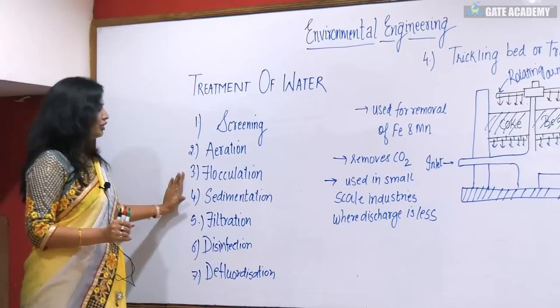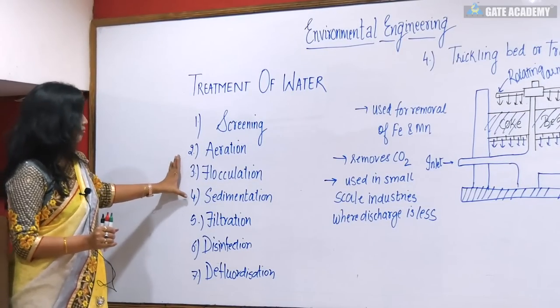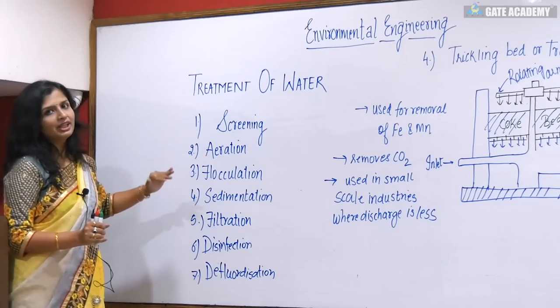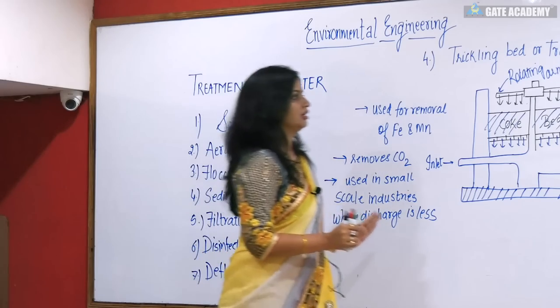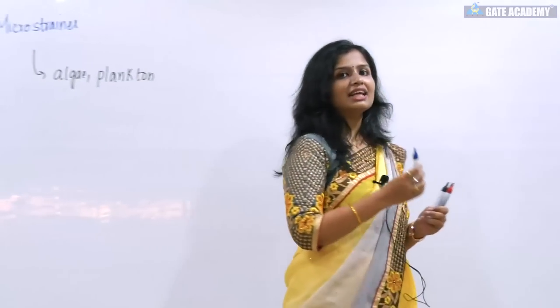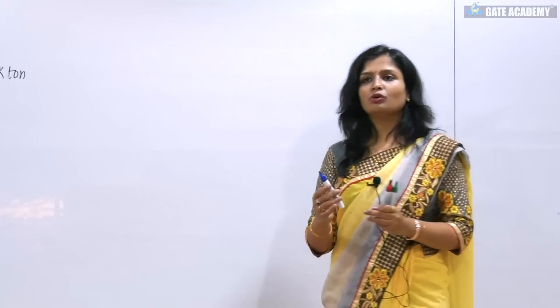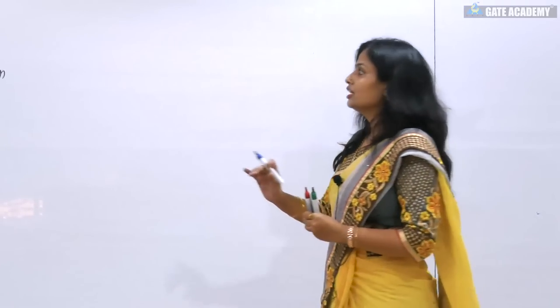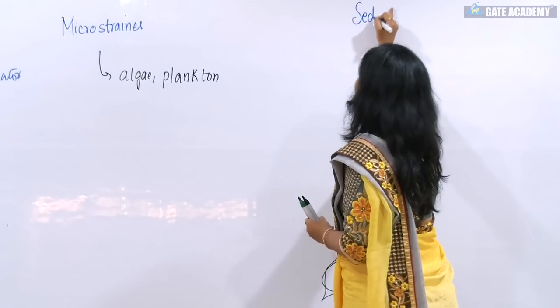Now comes the flocculation part. But before discussing flocculation, I will make you understand coagulation and flocculation together. Let us start with the sedimentation part first, because after understanding sedimentation I hope you will understand why flocculation and coagulation are needed — if sedimentation can be done, why do we need to flocculate the particles? So we will now be dealing with sedimentation.